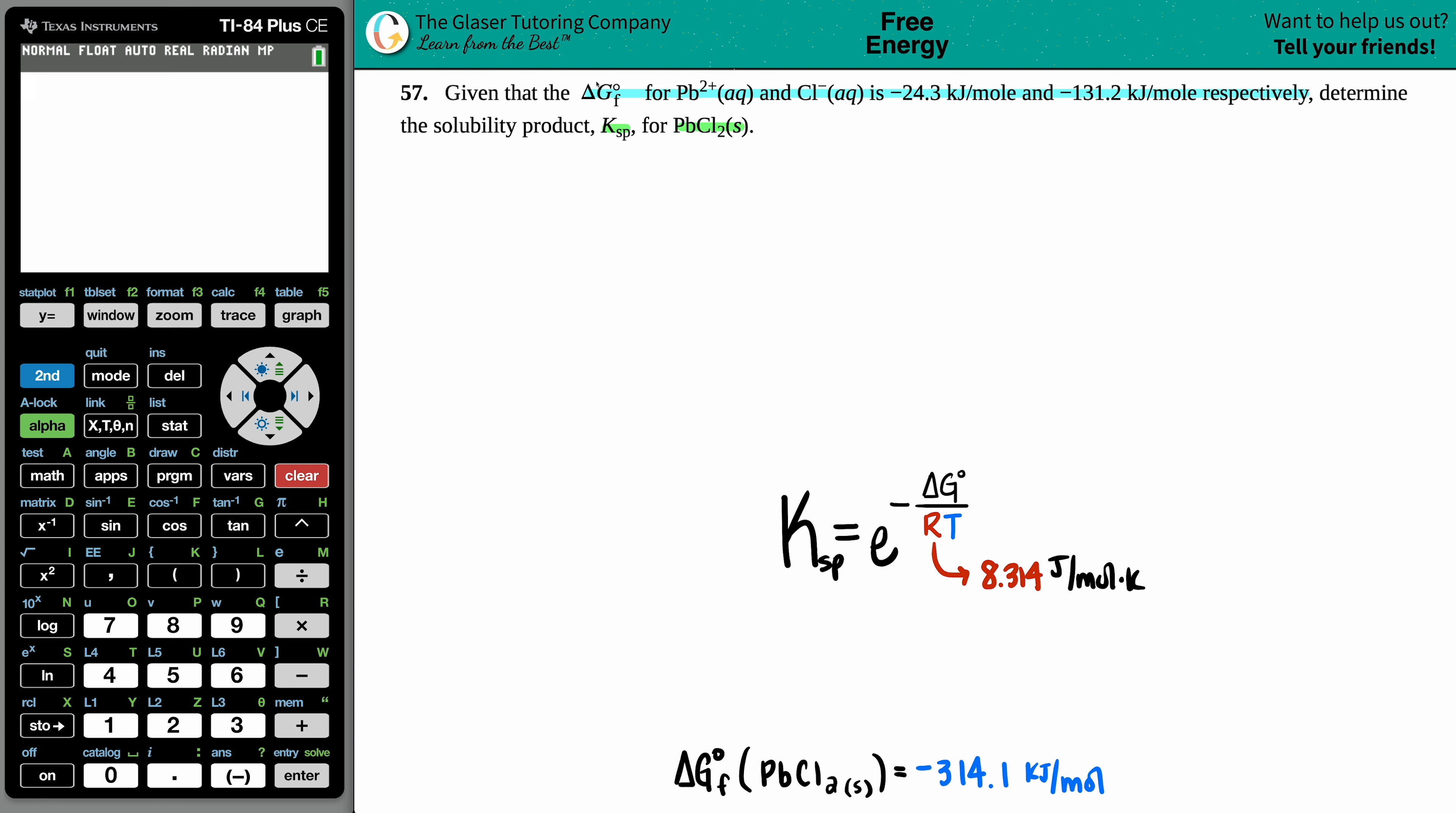They didn't specifically say what temperature, but they give me a clue that I'm using delta G° values, especially for formation values. Whenever you're using delta G°, that means standard, which is always at room temp. Room temp is 25°C. We have to convert 25°C into kelvin by adding 273.15, which gives 298.15. So I have R, I have T, I'm solving for Ksp, and I need a delta G.